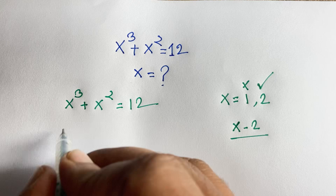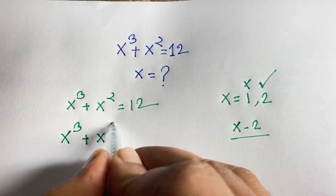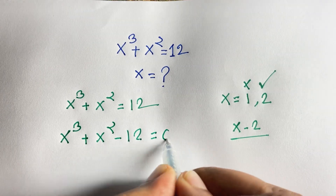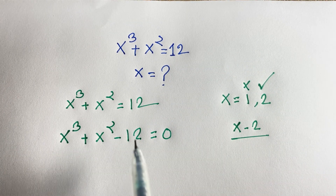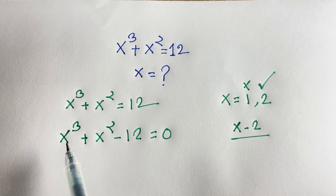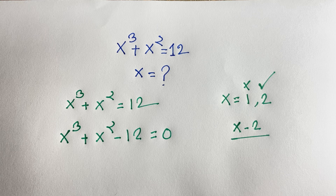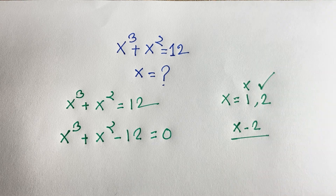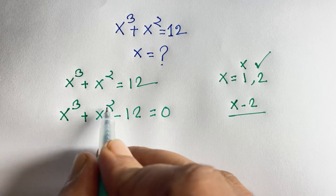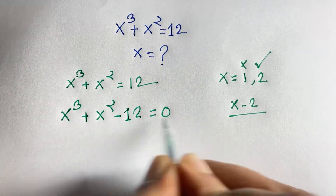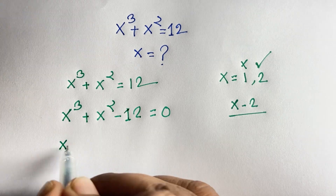At this moment, this expression becomes x to the power 3 plus x squared minus 12 is equal to 0 — I subtracted 12 from both sides. This is a cubic equation. We know that one factor is x minus 2, so I take x minus 2 here and we will find out the other factor.